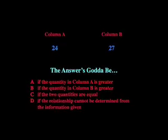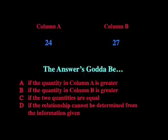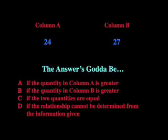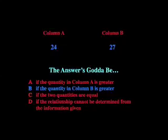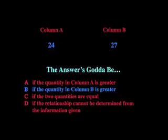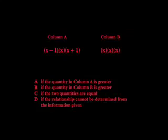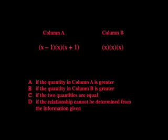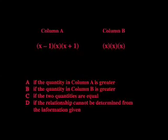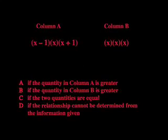So a lot more GRE students said the answer's gotta be B — the quantity in column B is greater. But we can check even more carefully, because nowhere did they tell us that x is an integer, so it could be a decimal.